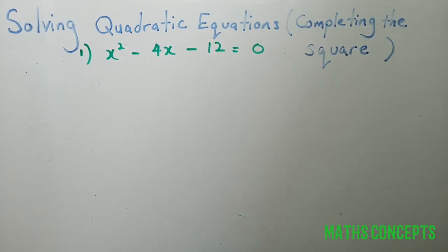Hi, in today's video I'm going to teach you how to solve quadratic equations by completing the square. Given that this equation is x squared minus 4x minus 12 equals 0, by completing the square means we have to halve the middle term.